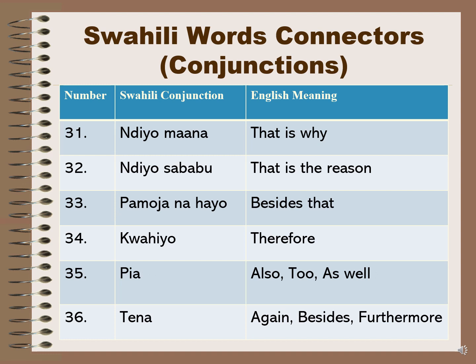Number thirty-one: the Swahili conjunction 'ndiyo maana' means 'that is why'. Number thirty-two: 'ndiyo sababu' meaning 'that is the reason'. Number thirty-three: 'pamoja na hayo' means 'besides that'. Number thirty-four: 'kwa hiyo' is 'therefore'. Number thirty-five: 'pia' can mean 'also', 'too', or 'as well'. Number thirty-six: 'tena' means 'again', 'besides', or 'furthermore'.